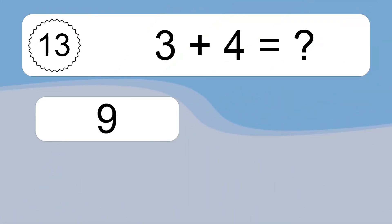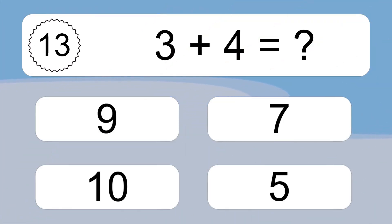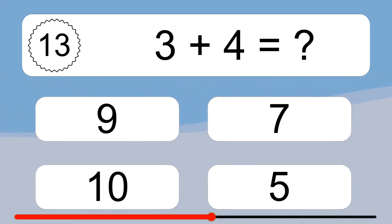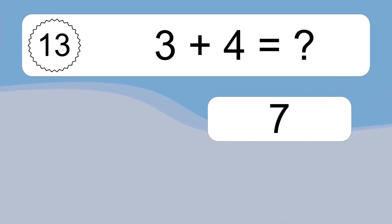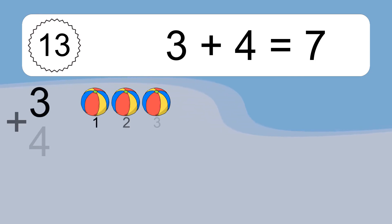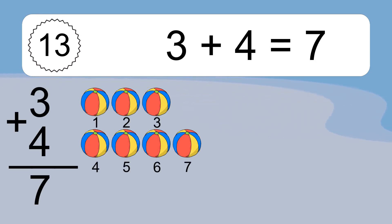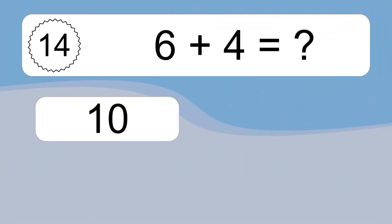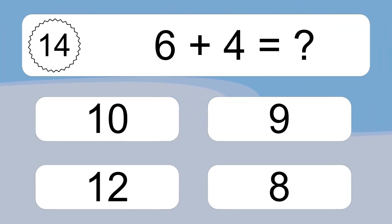3 plus 4 equals what? 3 plus 4 equals 7.